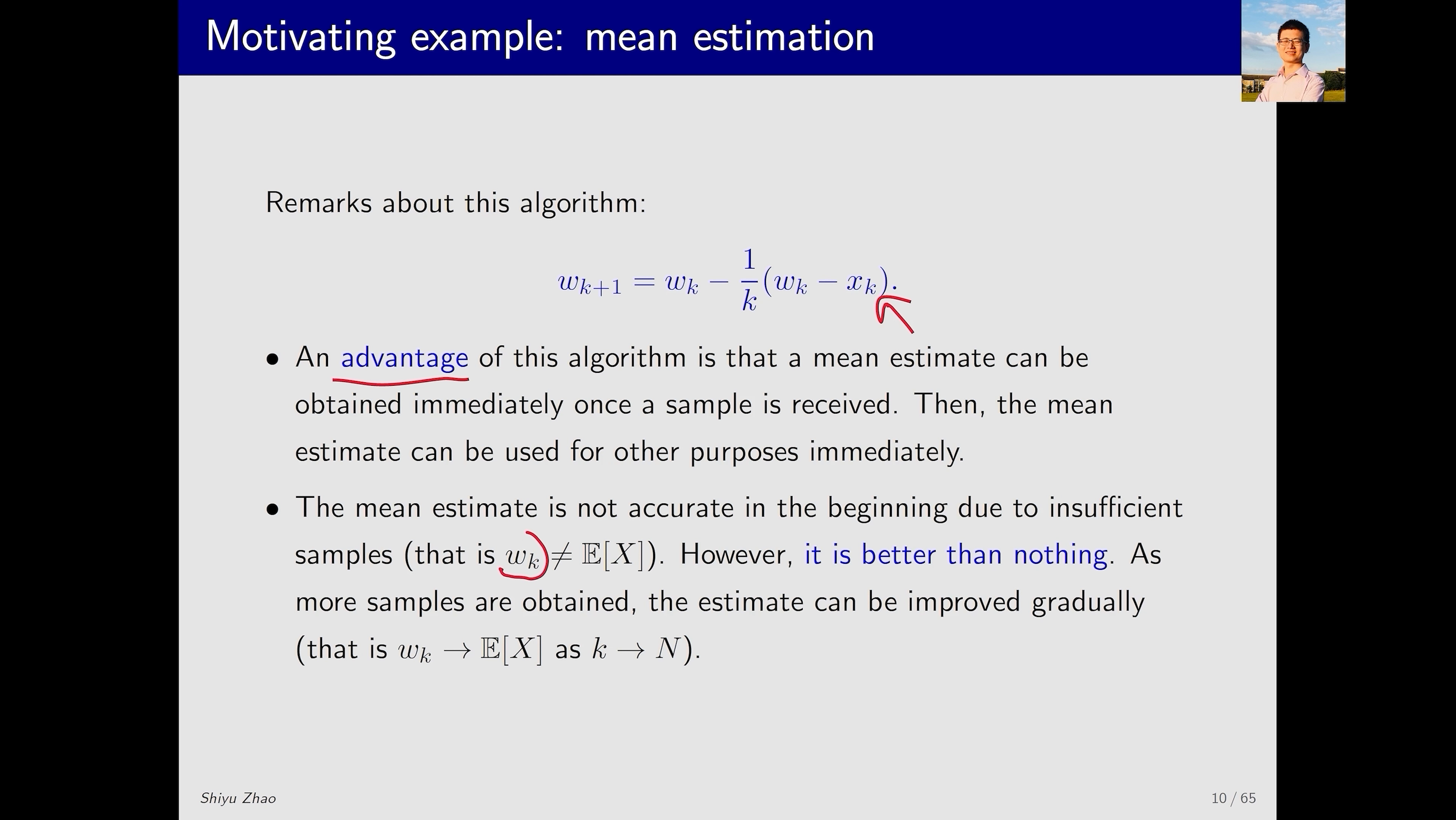Initially, when w_k is based on a small amount of samples, it may not accurately approximate E[X]. However, it's better than nothing or waiting until the end to get an average. During this process, even though w_k is not accurate, it can still be applied to some tasks. As more samples are obtained, w_k can approximate E[X] more accurately.